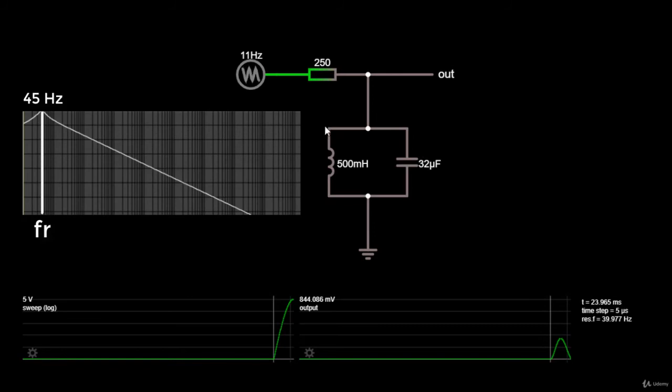When it gets close to the resonant frequency, the impedance of the LC pair increases, keeping the output closer to the input.